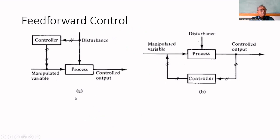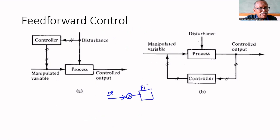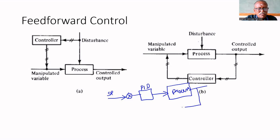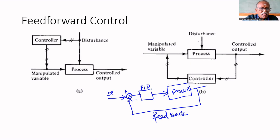Now let us see the feedforward controller. What we have seen so far is called a feedback controller. In a feedback controller, a set point is given, a PID controller is there, the output of the PID controller is given to the process, the process output is measured and fed back to the PID controller — that's why it is called a feedback controller.